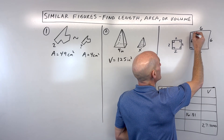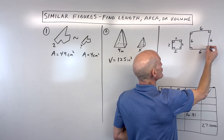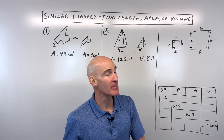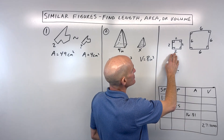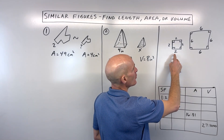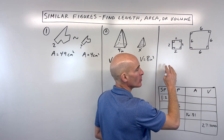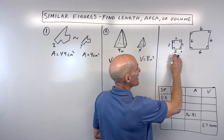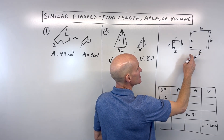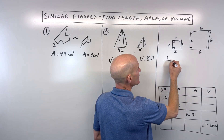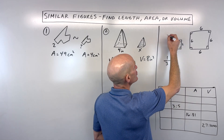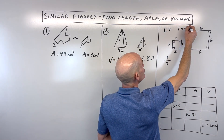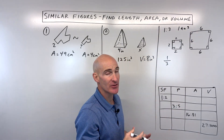It's just making the corresponding sides proportionally larger or smaller by a scale factor. If we have these two squares, the ratio of the corresponding sides is two to six, which we can write as a fraction one-third, or with a colon as one to three.